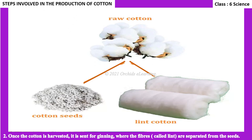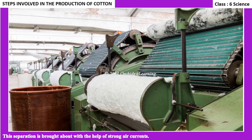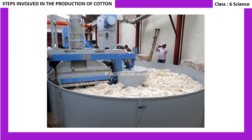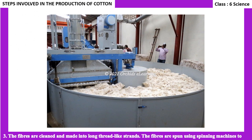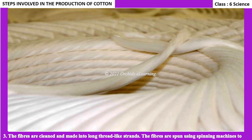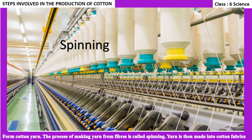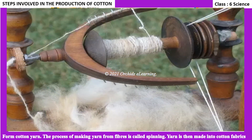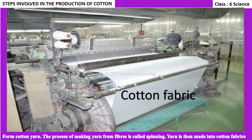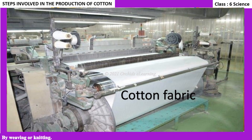The separation of lint from seeds is brought about with the help of strong air currents. The fibers are cleaned and made into long thread-like strands. They are then spun using spinning machines to form cotton yarn. The process of making yarn from fibers is called spinning. Yarn is then made into cotton fabrics by weaving or knitting.